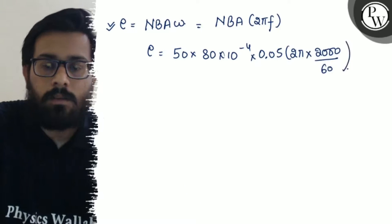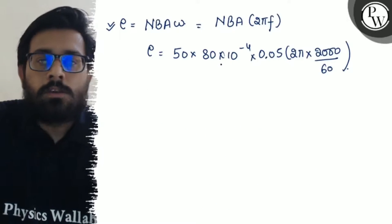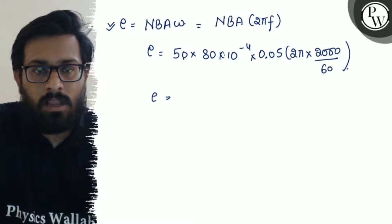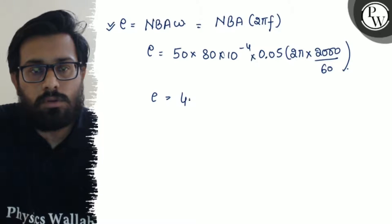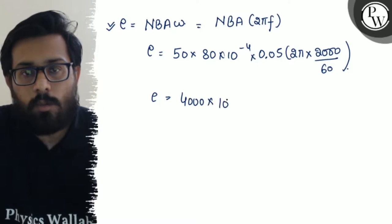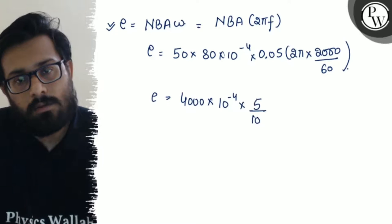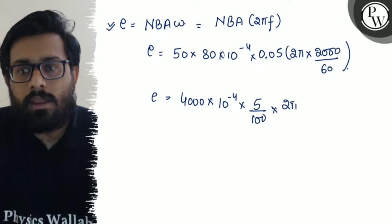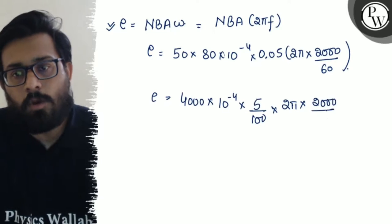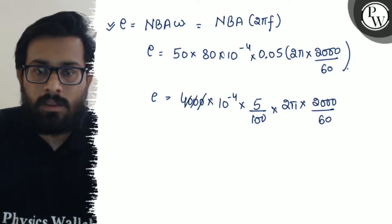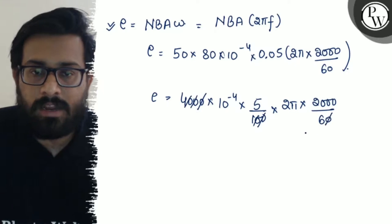Now solving it further, so this comes out to be: 5 into 40 gives 40, so 4000 × 10⁻⁴ × 5/100 × 2π × 2000/60. The zeros cancel out - 1, 2, 3, 1, 2, and 3. All these zeros cancel out.